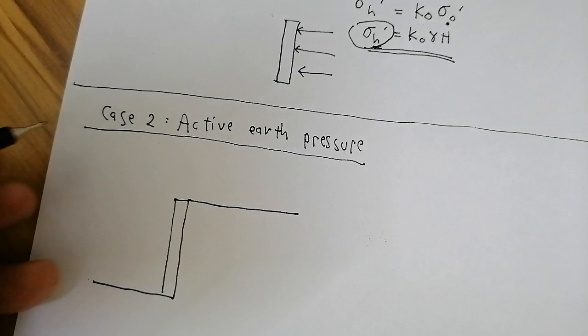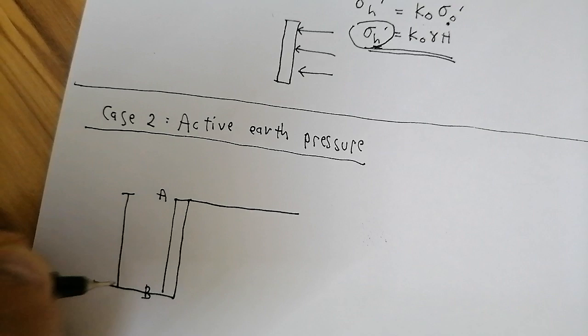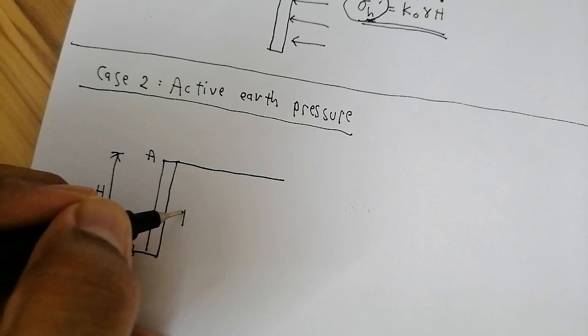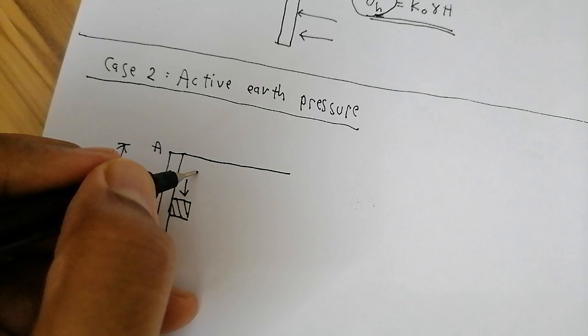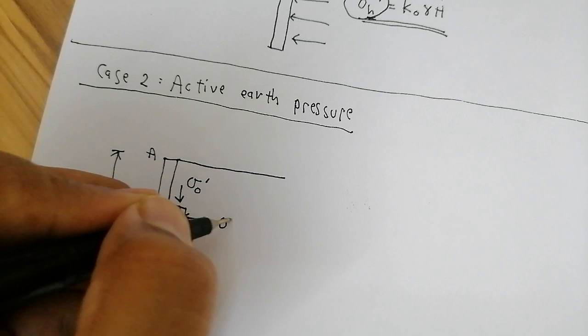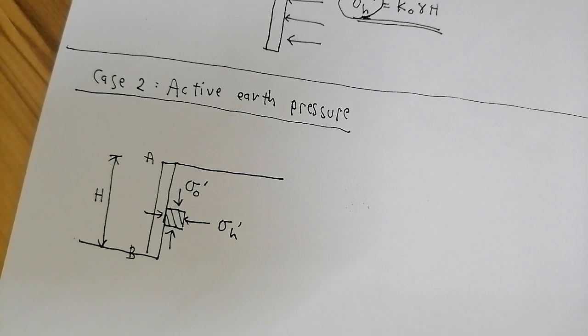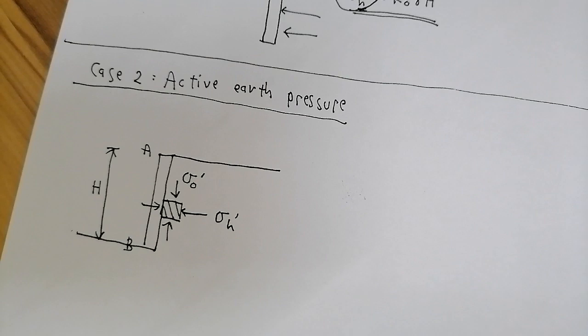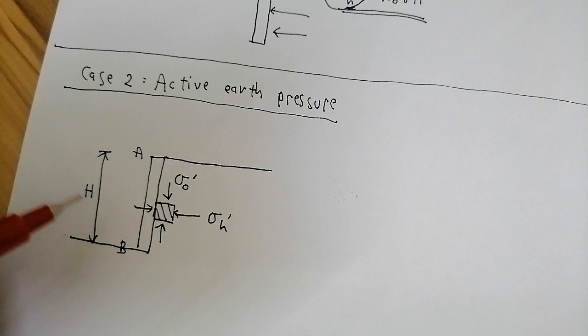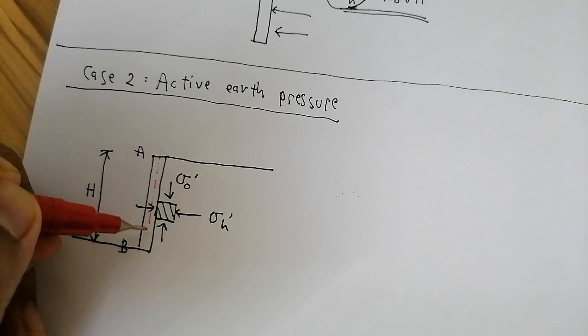Retaining wall AB with height h, and the same small soil mass under investigation. You still have the same vertical effective stress and horizontal effective stress. With active earth pressure, this pressure causes the wall to move away from the soil. This is the center line of the original retaining wall.